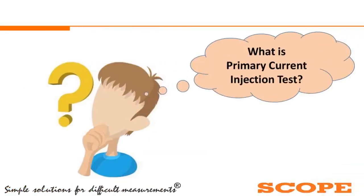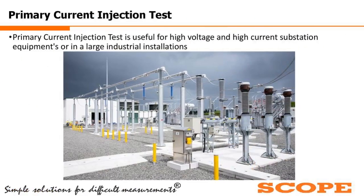The first question in our mind: what is the primary current injection test, and what are its applications? Basically, the primary current injection test is very useful for high voltage and high current substations — for testing current transformers, circuit breakers, or checking the healthiness of relays and circuit breakers in larger industrial installations.